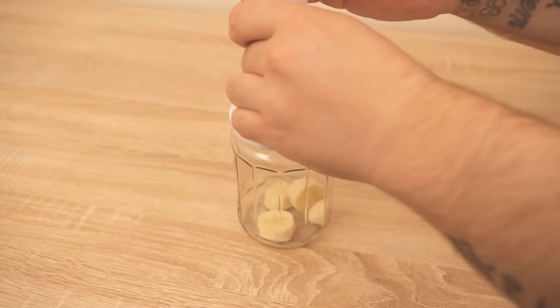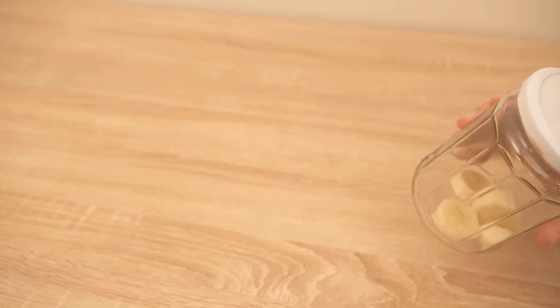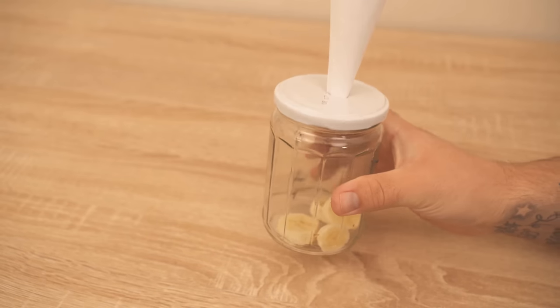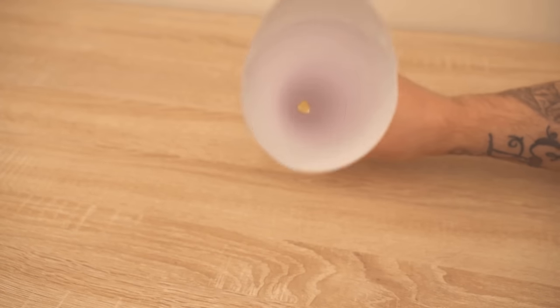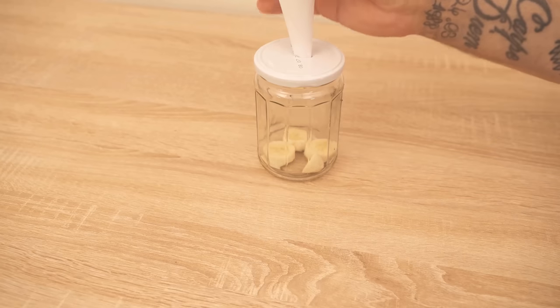Now we put the funnel into the hole and our fly trap is ready. This is how the whole thing looks like. And you can now set it up where you have an increased number of flies. They will be attracted by the attractor and go into the funnel and slowly climb into the hole and here they will not come out. They are stuck.